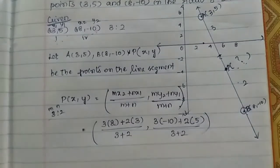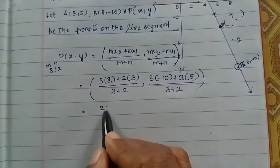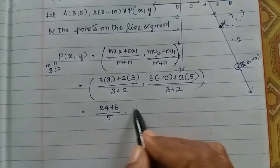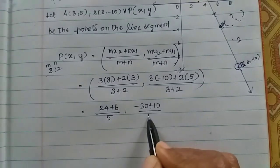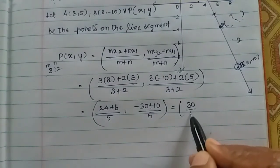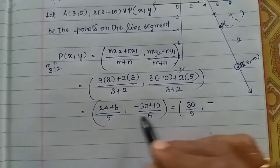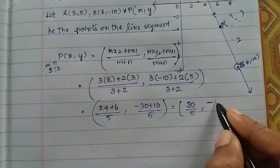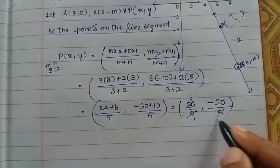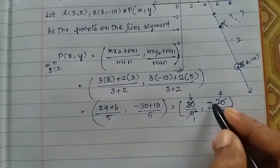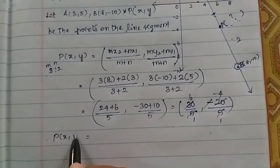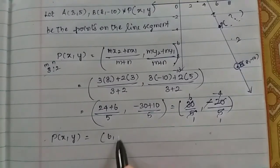So x equals 24 plus 6 divided by 5. That is 30 divided by 5, which equals 6. And y equals minus 30 plus 10 divided by 5, which is minus 20 divided by 5, which equals minus 4. Therefore, the coordinate of P is (6, −4).